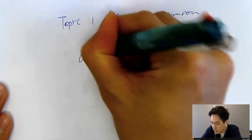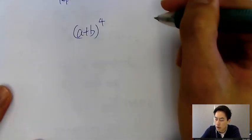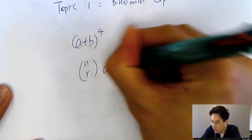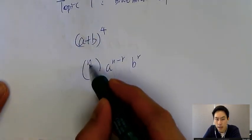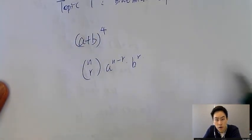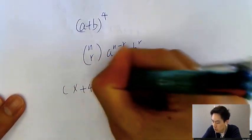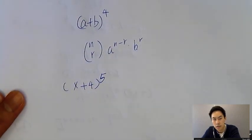Basically all you need to know about binomial expansion is, let's say, (a+b) to the power of 4. How do you expand this? It's all about one equation. All you need to know is this: nCr a^(n-r) b^r. This equation is on the data booklet. Let me show you with (x+4)^5.